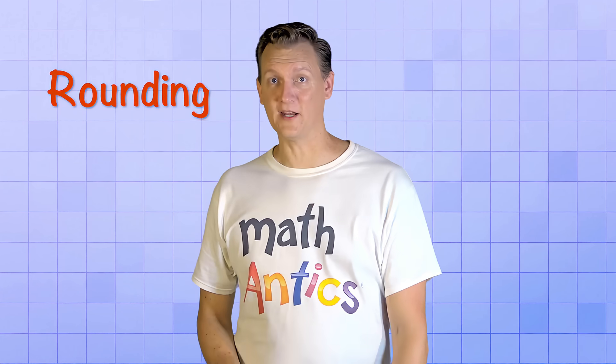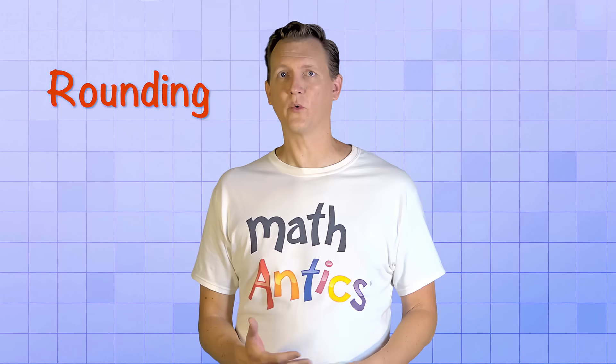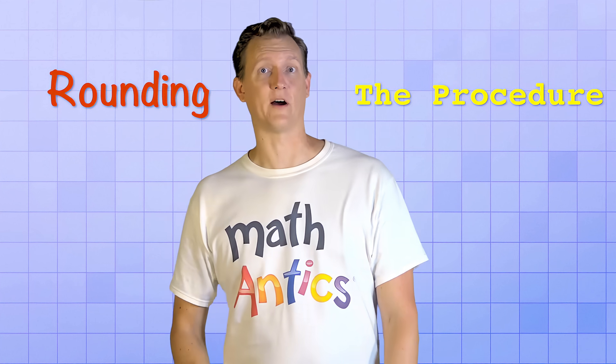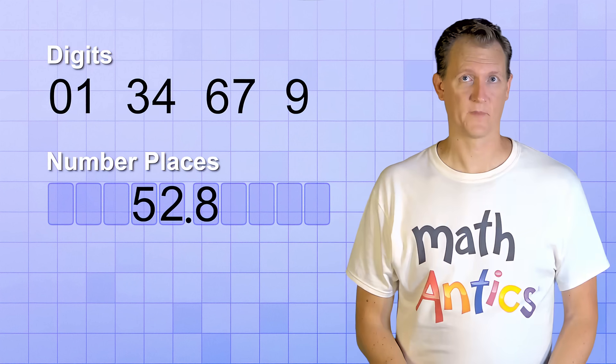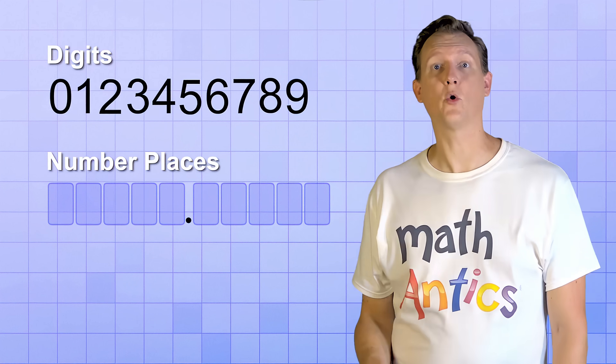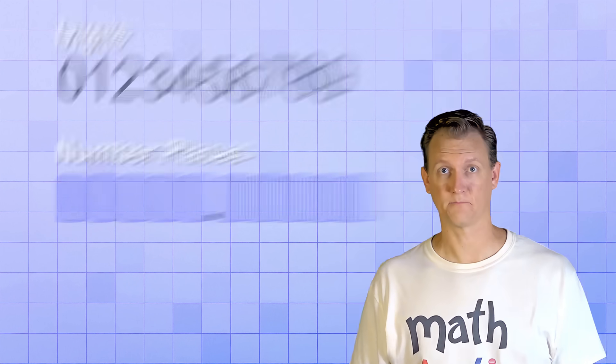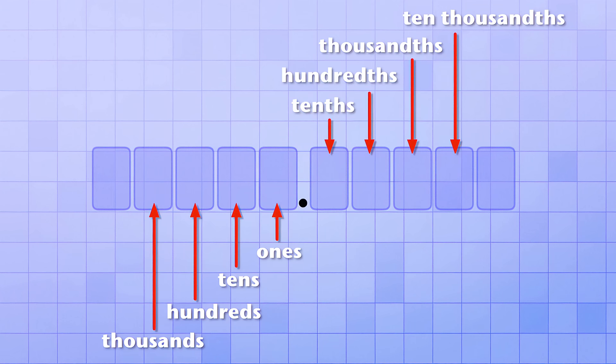Now that you know what rounding is and why we do it, for the rest of this video, we're going to focus on learning the procedure we follow to round off a number. Do you remember how our number system is based on digits and number places? Each digit of a number occupies a particular number place, and each number place is named according to the amount it represents. And it's important to know those names whenever you're rounding a number, because you'll usually be asked to round to a specific number place. For example, you may be asked to round a number to the nearest 10, or the nearest 100. Or, you might be asked to round a number off to the nearest tenth, or hundredth. You may even be asked to round to the nearest whole number, which is another way of asking you to round to the ones place.